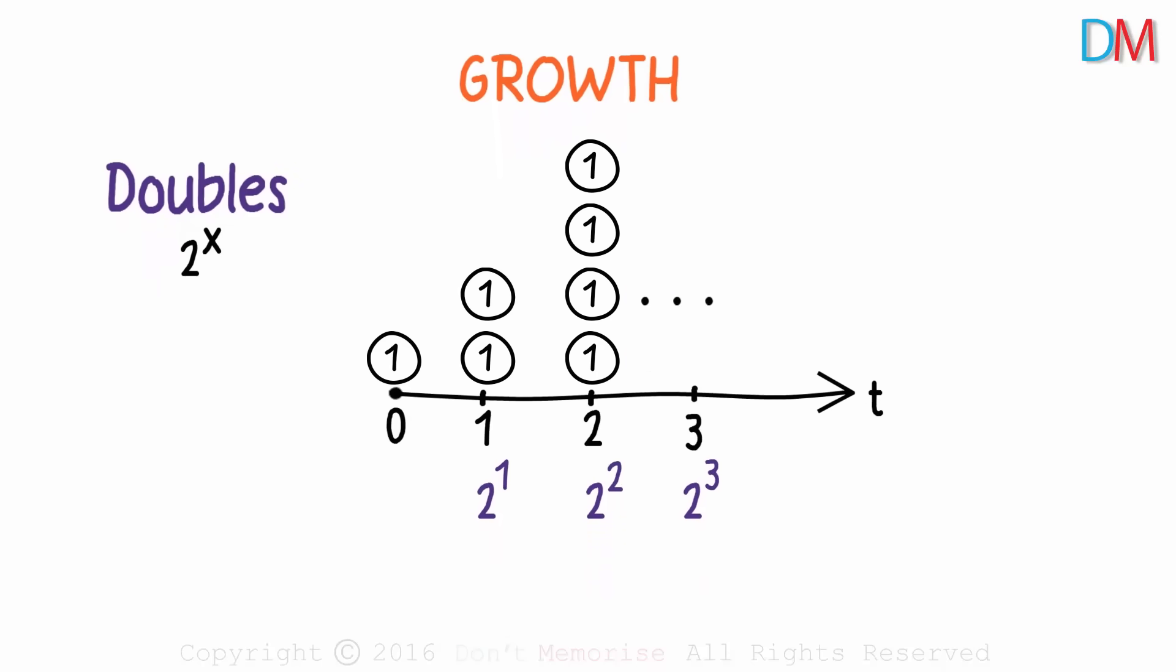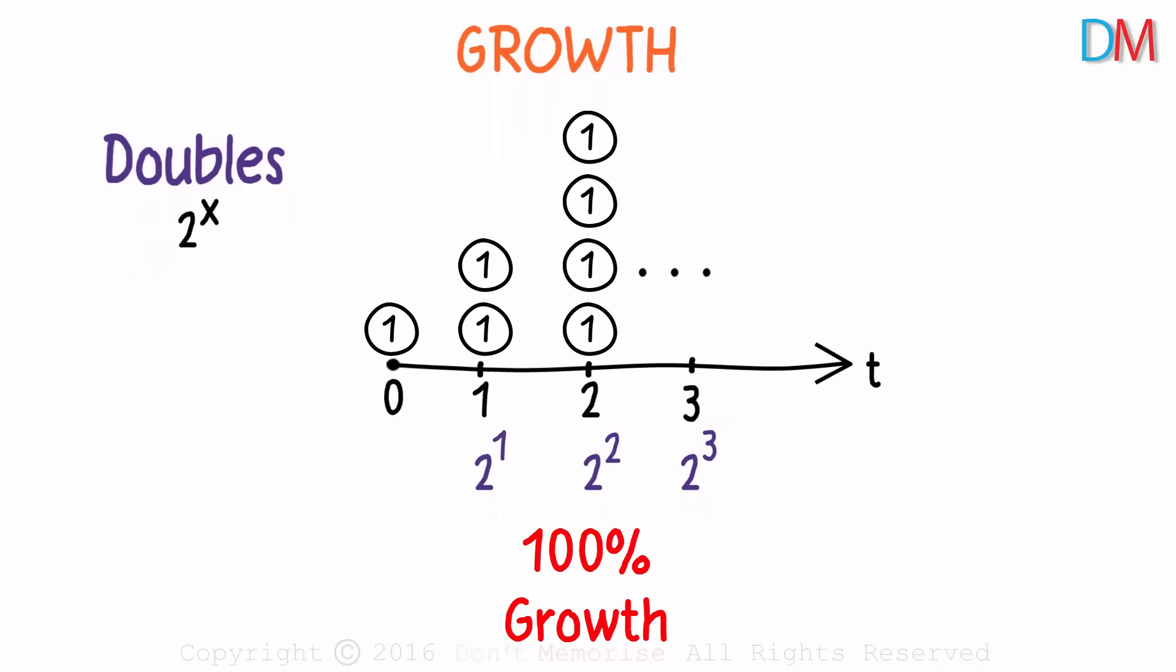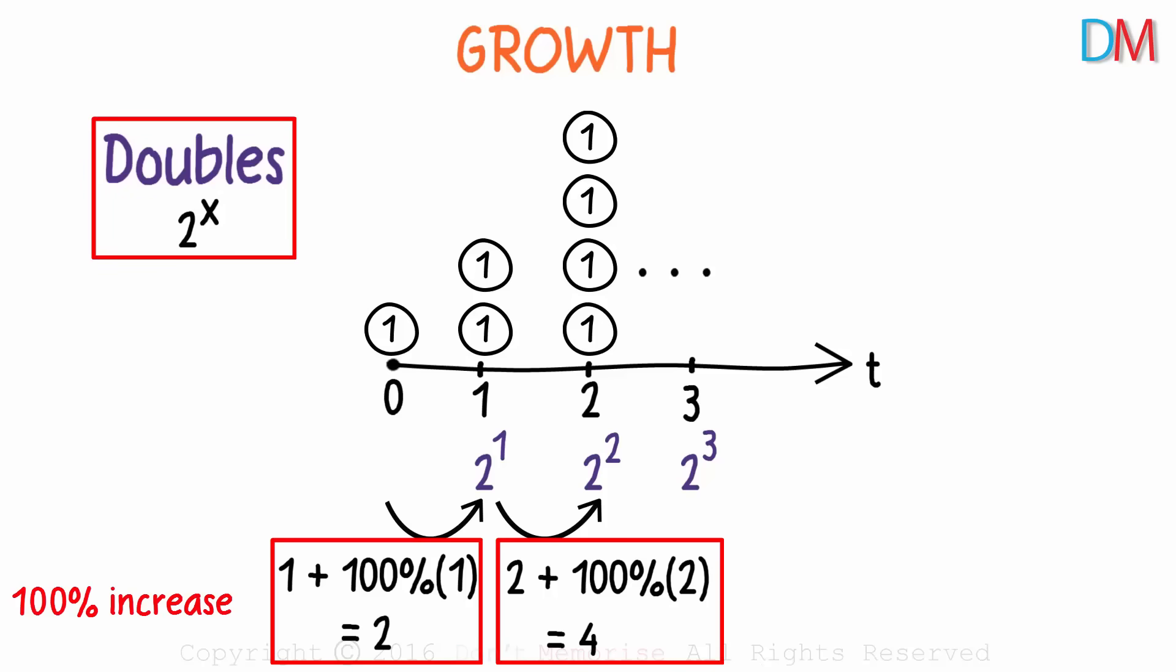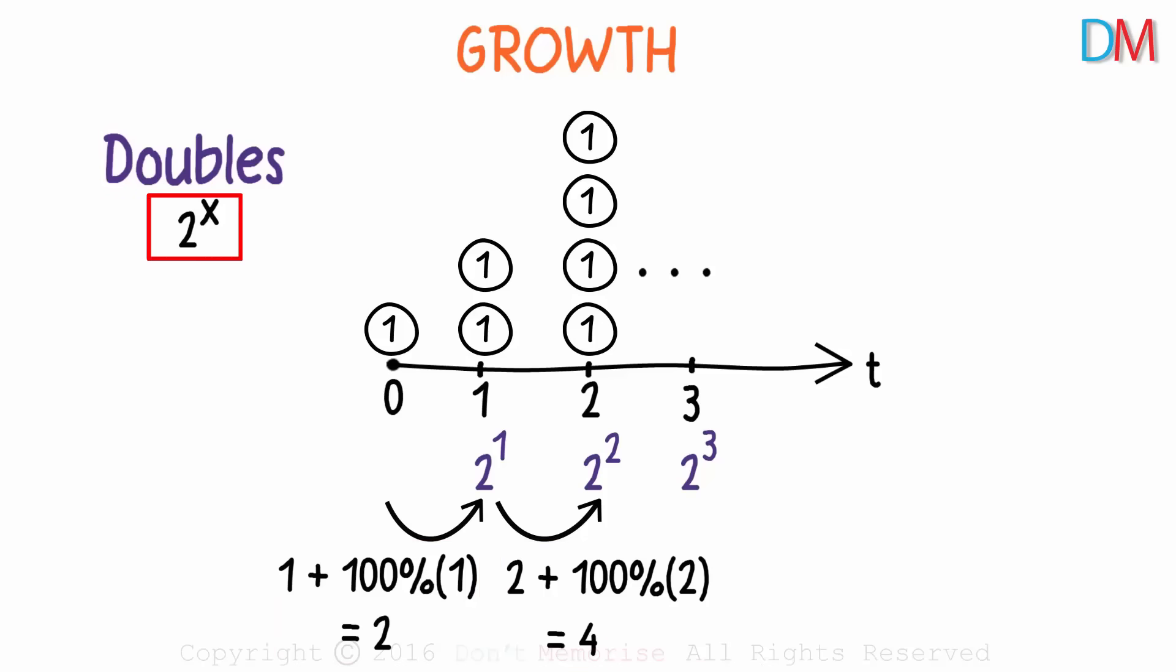Another way to look at it is that there is one hundred percent growth every time period. One plus one hundred percent of one gives us two. One dollar was increased by one hundred percent to get two. In the second time period, two dollars grew to four dollars. Two plus one hundred percent of two gives us four. And so on. So doubling the value is the same as a one hundred percent increase. So 2 raised to x can also be written as 1 plus 100% raised to x. It's like you are getting a one hundred percent return on your investment.